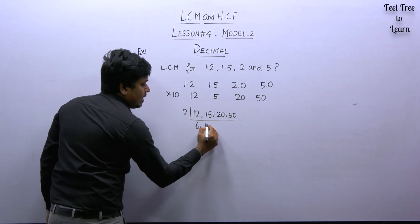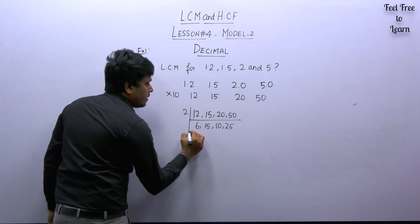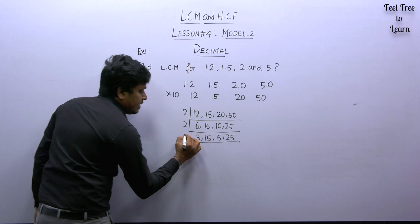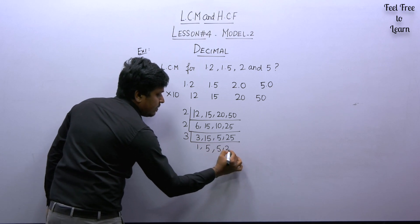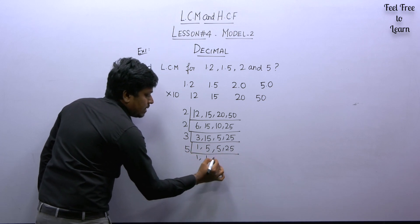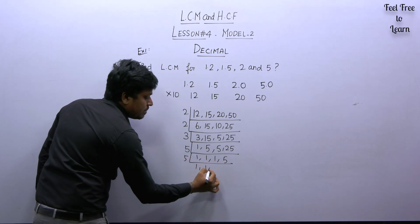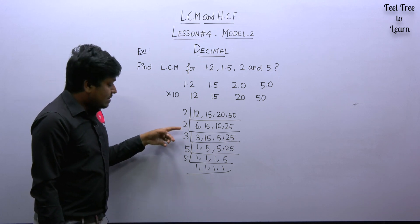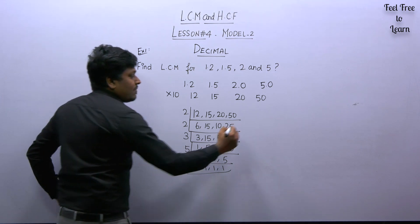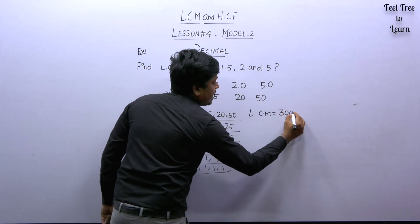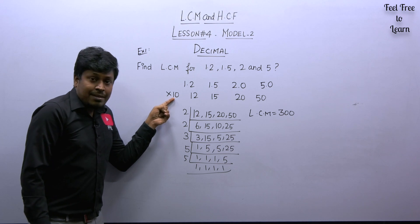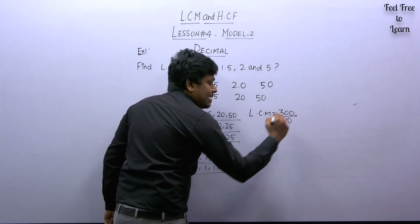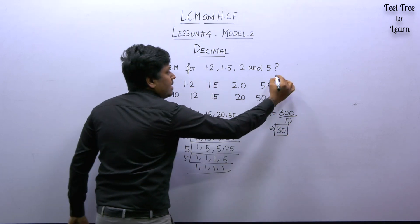Dividing: take 2 — 12 becomes 6, 15 stays, 20 becomes 10, 50 becomes 25. Again take 2 — 6 becomes 3, 15 stays, 10 becomes 5, 25 stays. Take 3 — 3 becomes 1, 15 becomes 5, 5 stays, 25 stays. Take 5 — results become 1, 1, 1, 5. Again 5 — final row is 1, 1, 1, 1. So LCM equals 2 × 2 × 3 × 5 × 5 = 300. Here we multiplied by 10, so at last divide by 10.